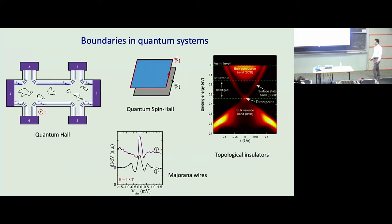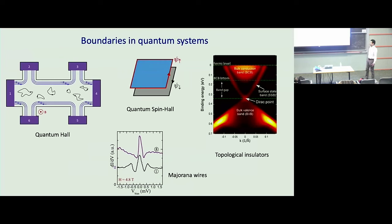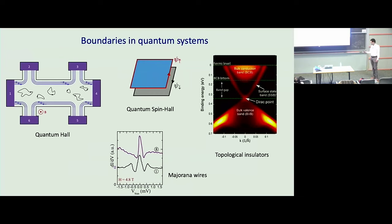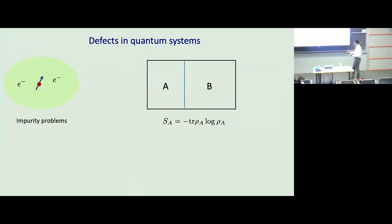But what about the case when the bulk is gapless — when the bulk is critical? This turns out to be a much more difficult problem that takes us into the realm of boundary conformal field theory, at least when the bulk is described by conformal field theory. Even for some of the simplest classical critical bulk states, the boundary phase diagram is still in progress of being understood.